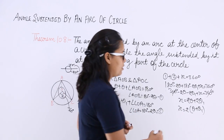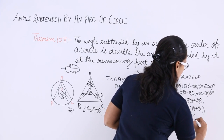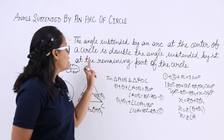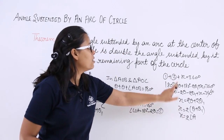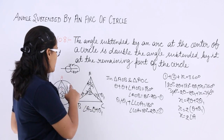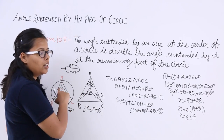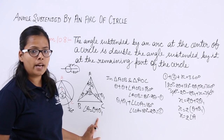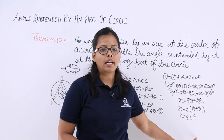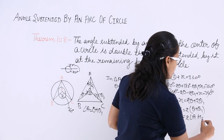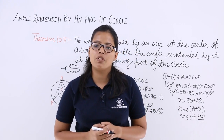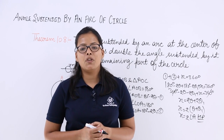X is double the angle at A. From here, it has been proved that the angle subtended by an arc at the center of the circle is double the angle subtended by it at the remaining part of the circle. The remaining part is point A lying on the circle. The angle subtended at A is θ + θ1, and the angle subtended at center O by arc BC is twice this angle. Hence proved. I will be taking one more theorem in the next video lecture. Thank you.